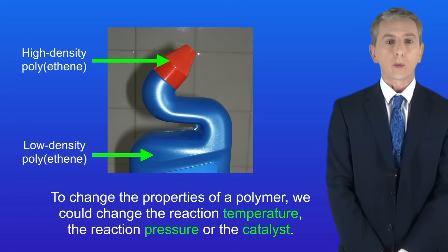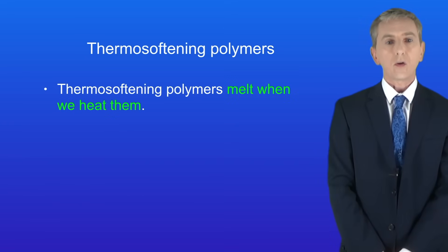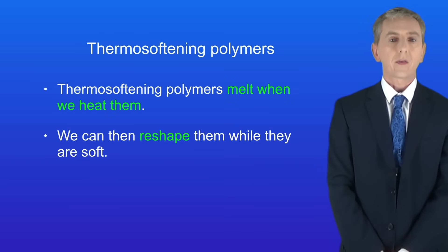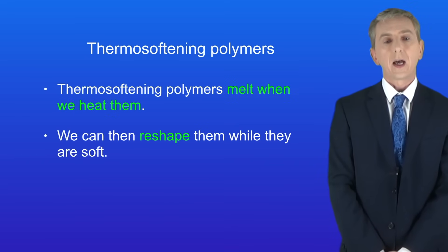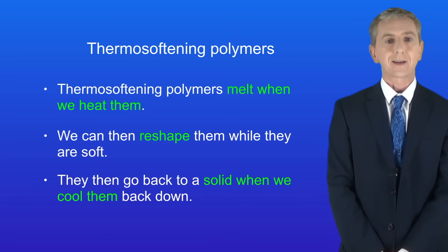Now one really important property of polymers is how they respond to heat, and we're going to look at that now. Thermosoftening polymers melt when we heat them. We can then reshape them while they're soft and they then go back to a solid when we cool them back down.